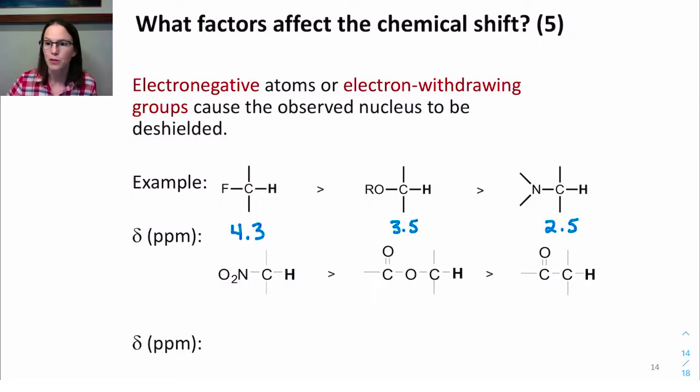So proton on a carbon next to a nitrate group being around 4. Proton on a carbon next to that electronegative ester oxygen atom appearing around 4.5. So proton on a carbon that's alpha to carbonyls, which is not as strong of an electron-withdrawing group, would have a chemical shift of around 2. So keep in mind that most electron-withdrawing groups increase the deshielding effect and move the signal farther to the left.